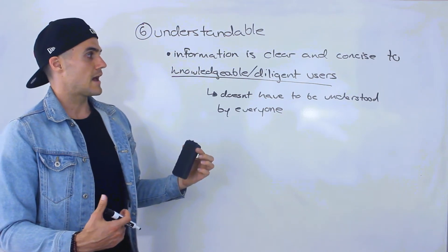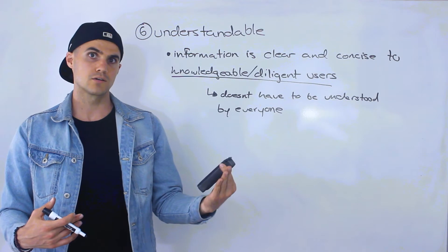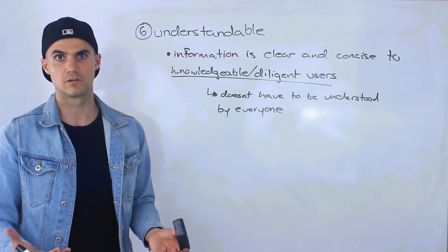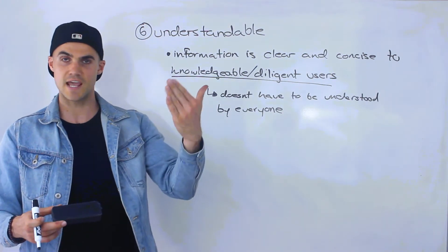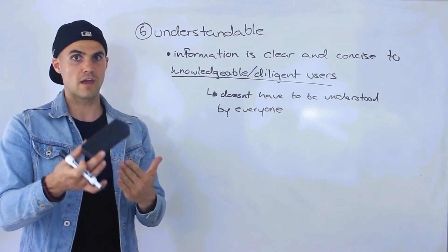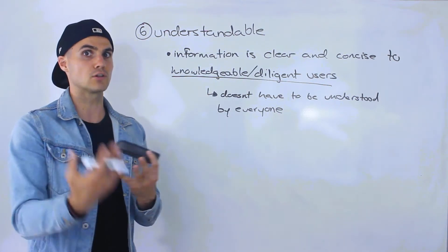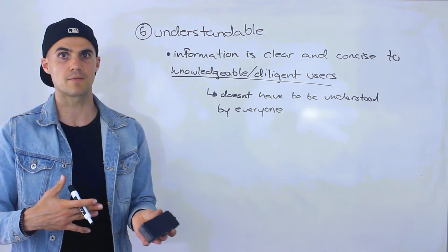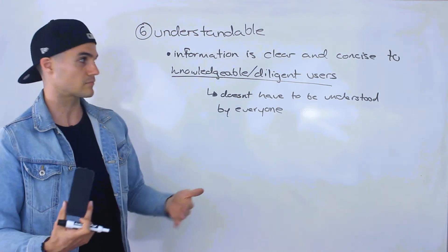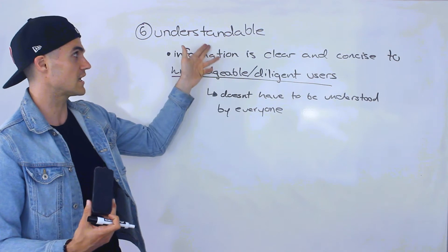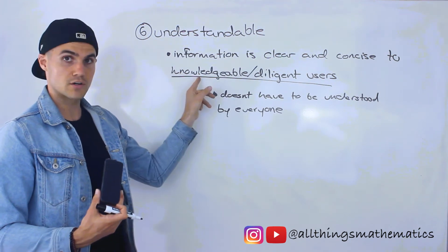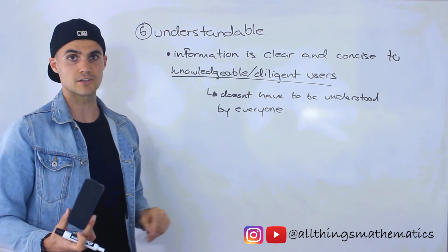On the other hand, let's say we take someone who works at a bank who has 20 years of experience loaning money to pharmaceutical companies. They're able to take a pharmaceutical company's financials, judge their creditworthiness, and make a decision of whether that company should get a loan or not. If they take a pharmaceutical company's financials and don't understand it with all their experience, then that company's information is violating this characteristic because that loan officer is a knowledgeable and diligent user.